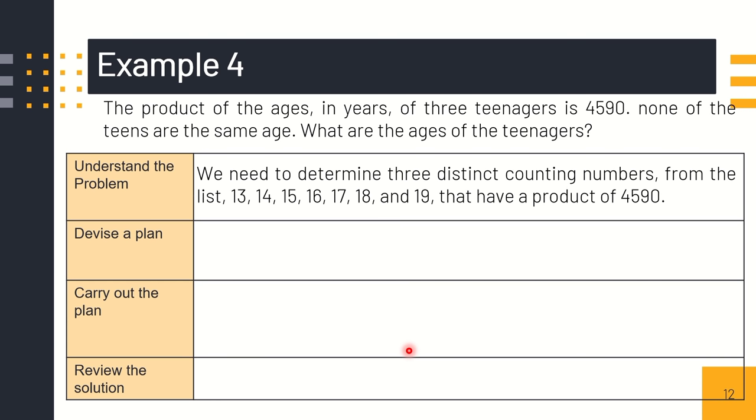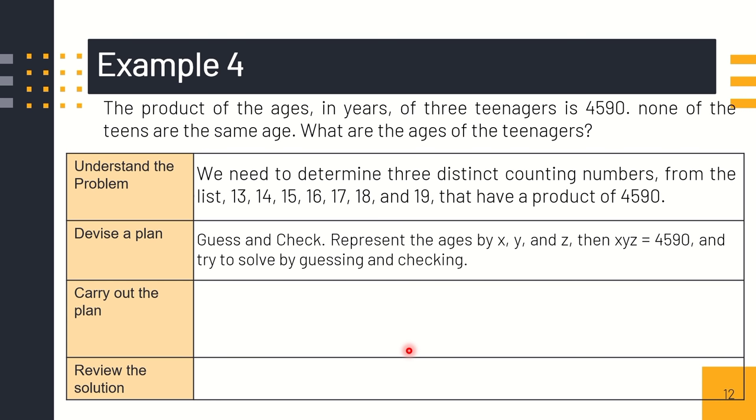Of course, we need to use guess and check. We'll guess and check. Since the product is 4,590, we are unable to solve this equation, but we notice that 4,590 ends in zero. Hence, 4,590 has a factor of 2 and a factor of 5. This means that at least one of the numbers we seek must be an even number and at least one number must have 5 as a factor. From the given list, only 15 has 5 as a factor. Therefore, 15 is one of the numbers.